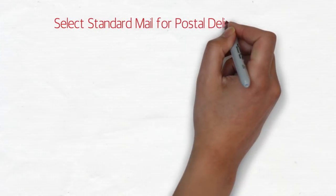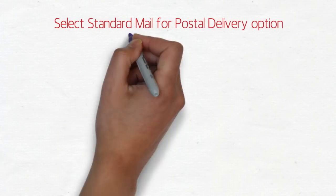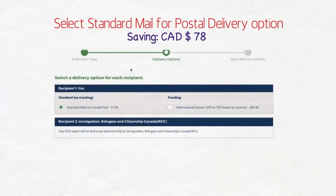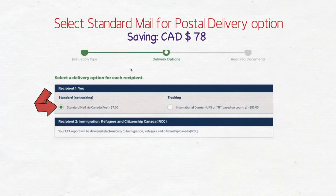The second tip: you should select the standard mail postal delivery option. When you get to that screen, select the first option — standard without tracking. You should not select the second option, which costs around $85. By choosing the standard option, which only costs $7, you can save $78 straight away.